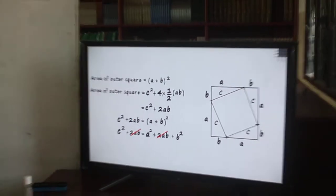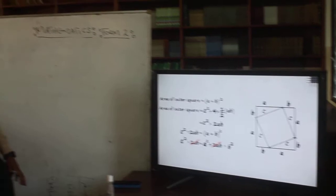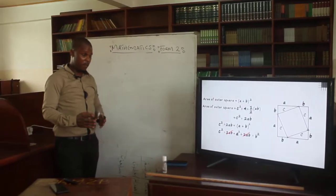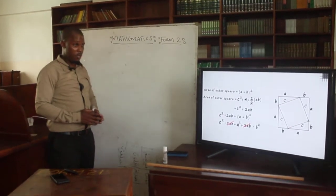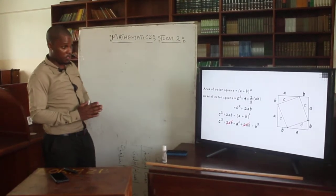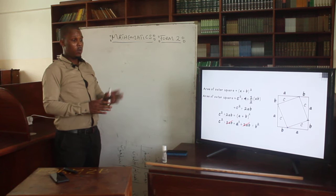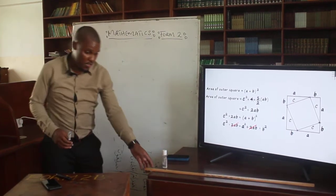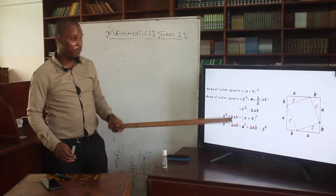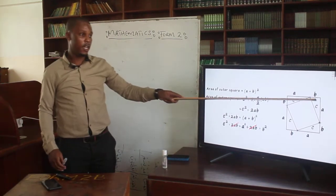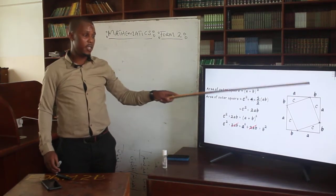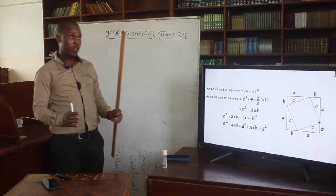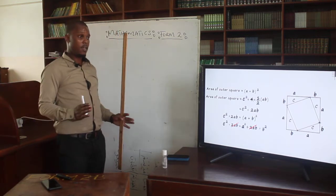So that's what we are talking about: the derivation of the Pythagoras theorem. I hope that from that video you can see what we are talking about. We are referring to a square there. Remember this square is the one which has been given the two sides here, A and B. They have been given those two letters.